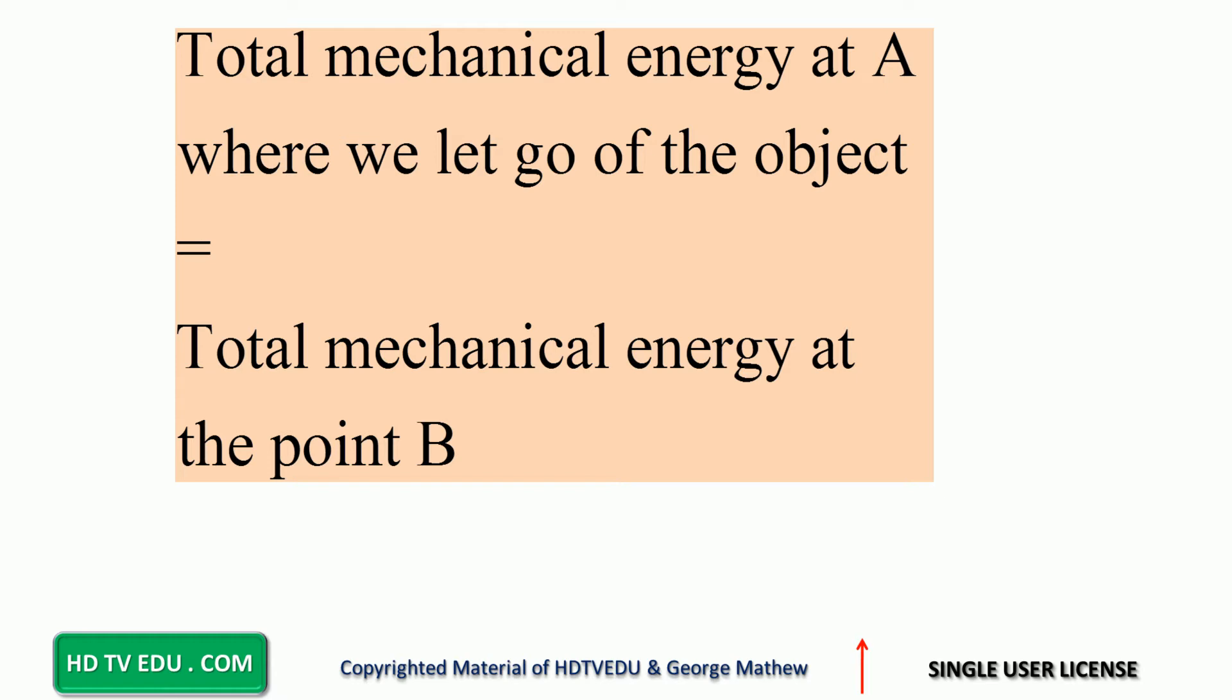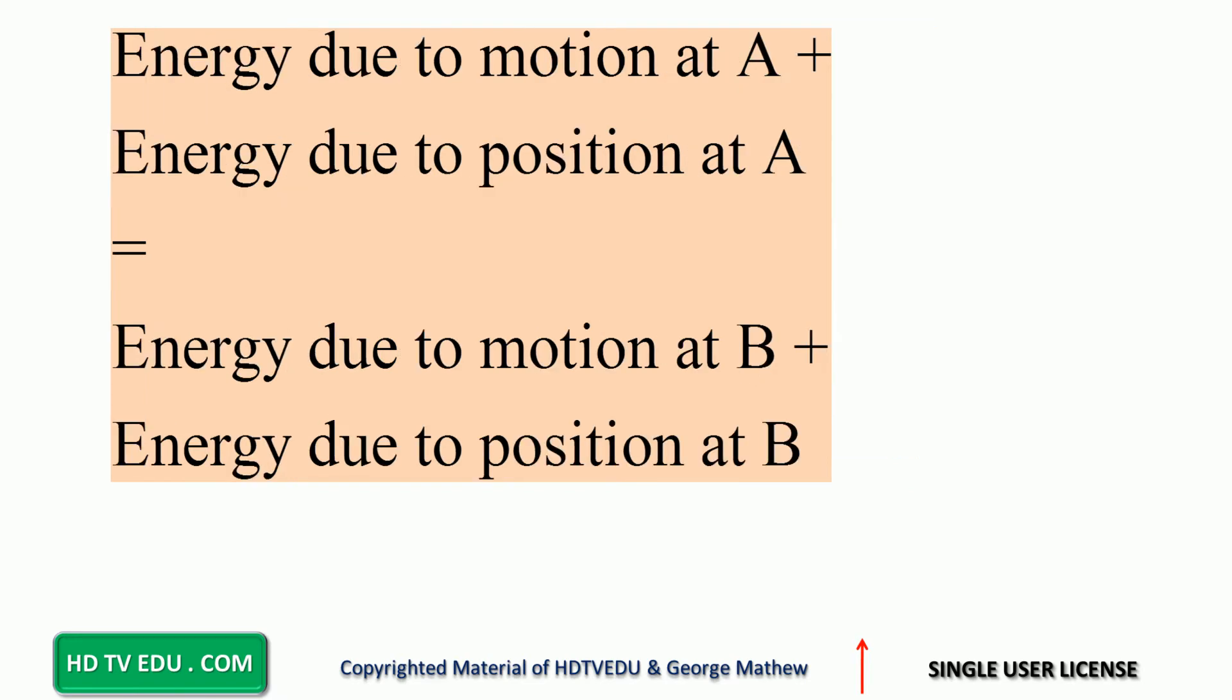At point A, what do we have? Just energy due to position. So energy due to motion at point A, which is zero actually, plus energy due to position at A, MGH.